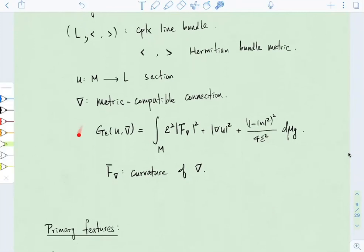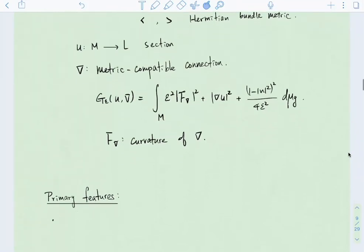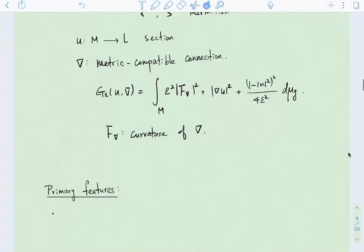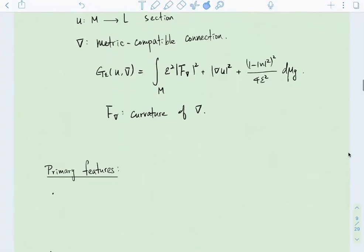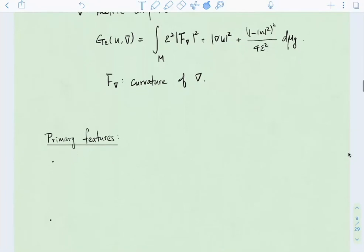And this is the U1 Yang-Mills Higgs functional. So some of its primary features, you'll hear a lot more about this in Daniel's talks. I'm just giving you a very quick overview of it. So its primary features, some of its primary features are as follows.